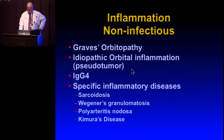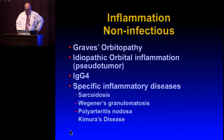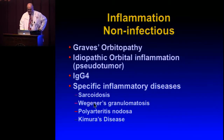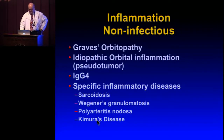Non-infectious inflammations include Graves' disease (Graves' orbitopathy, thyroid eye disease), idiopathic orbital inflammation, and IgG4-associated orbital inflammation, which is sort of the disease of the year. Specific inflammatory diseases include sarcoidosis and granulomatosis with polyangiitis — formerly known as Wegener's, though Wegener was reportedly a Nazi, so the name has been changed. Also polyarteritis nodosa and Kimura's disease.